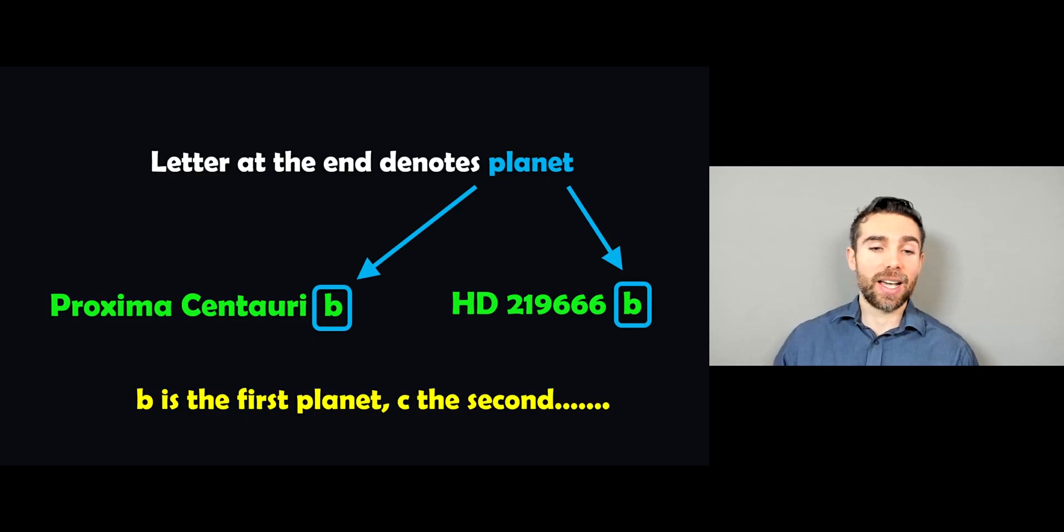Now, the last part of this name or this scientific designation relates to the actual planet itself. So here we have B. Now, B would be the first planet. C would be the second. And D would be the third.